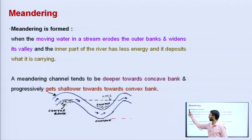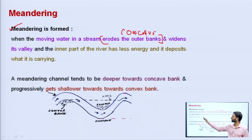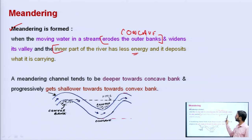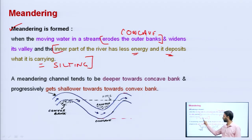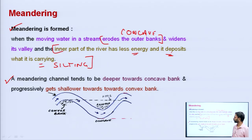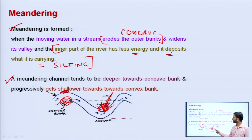Meandering is formed when the moving water in a stream erodes the outer bank, forming the concave bank and widening its valley. The inner part of the river has lesser energy due to the lesser velocity component, so it deposits silt — forming the convex bank. A meandering channel tends to be deeper towards the concave bank due to erosion action, and progressively shallower towards the convex bank where sediment deposition makes it silted up and shallow.